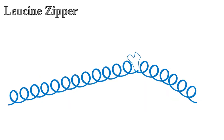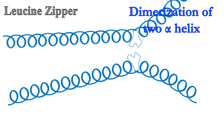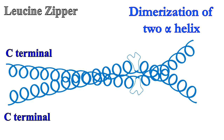The Leucine Zipper motif is made by the dimerization of two alpha helix monomers. Both helices are right-handed alpha helices. The dimerization of the helices occurs at the C-terminal end.